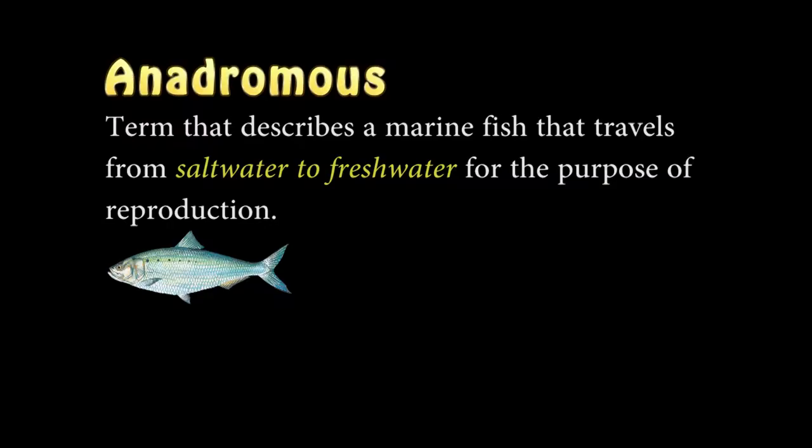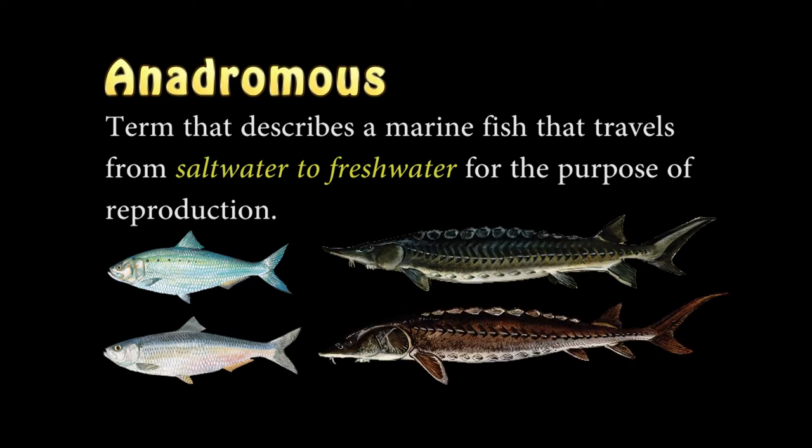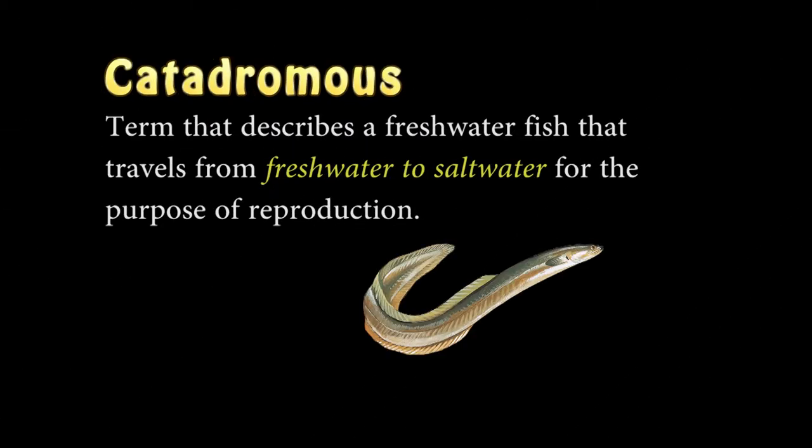Diadromous fish include a group of fishes that migrate between saltwater and freshwater for the purpose of reproduction. The species of diadromous fish that I'm responsible for are the anadromous fish, which include the American shad, the blueback herring, the Atlantic sturgeon, and the short-nosed sturgeon. The only catadromous fish that I'm responsible for is the American eel.